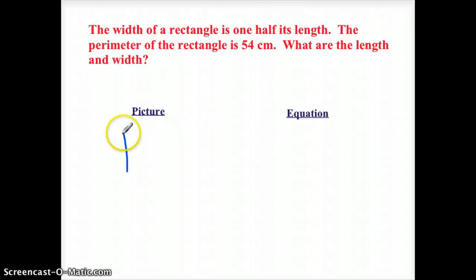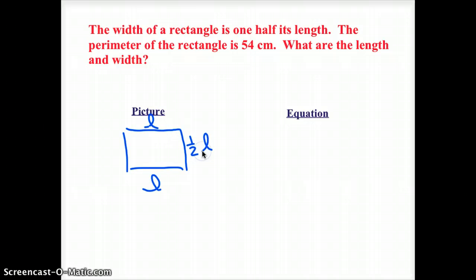Okay. So the width of a rectangle is one half its length. So again, I don't know the length, but I'm going to call it L. And the width is half of it, so I'm going to say half of L. And I know that the perimeter is 54 centimeters, and I'm trying to figure out the length and the width.